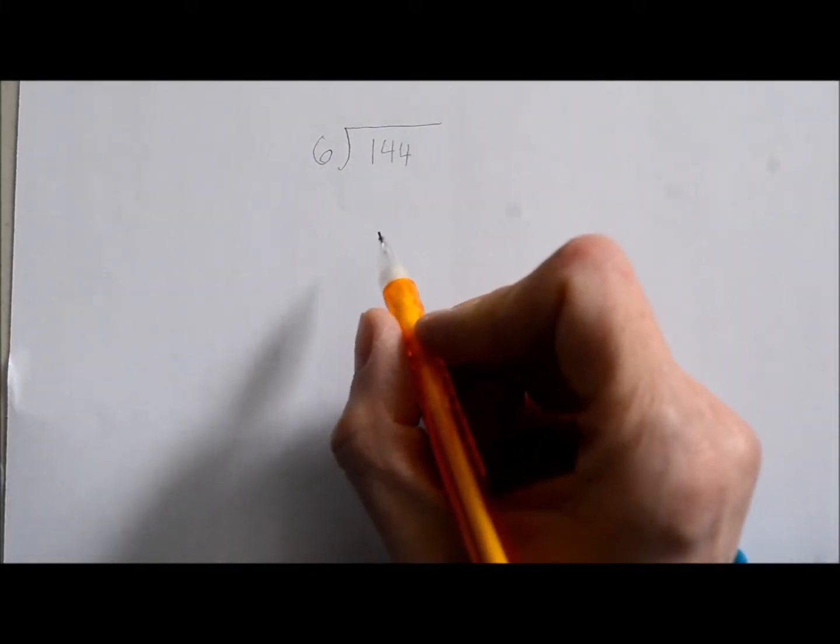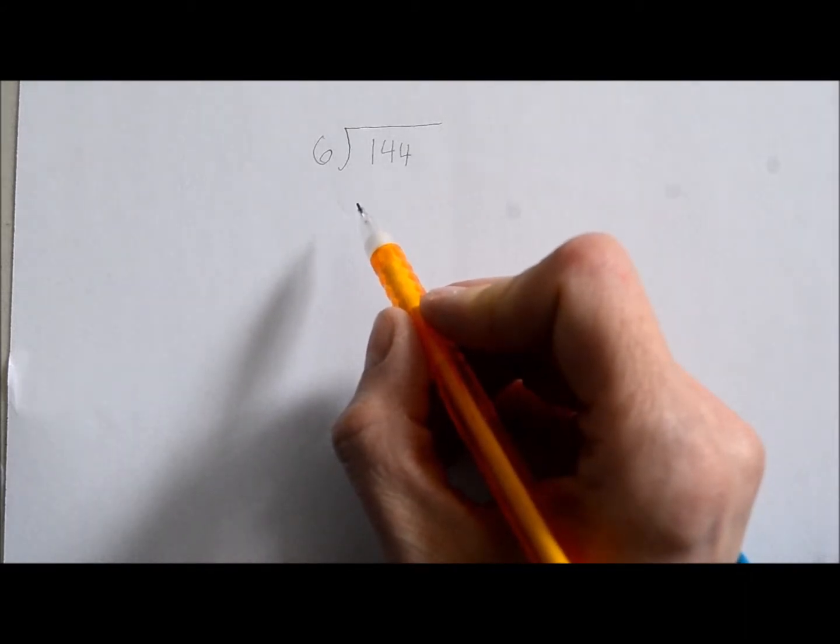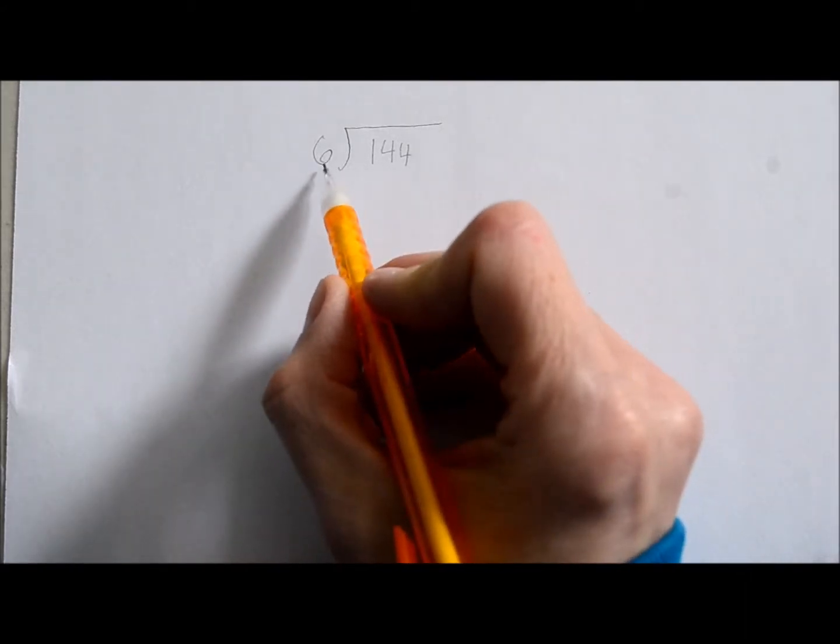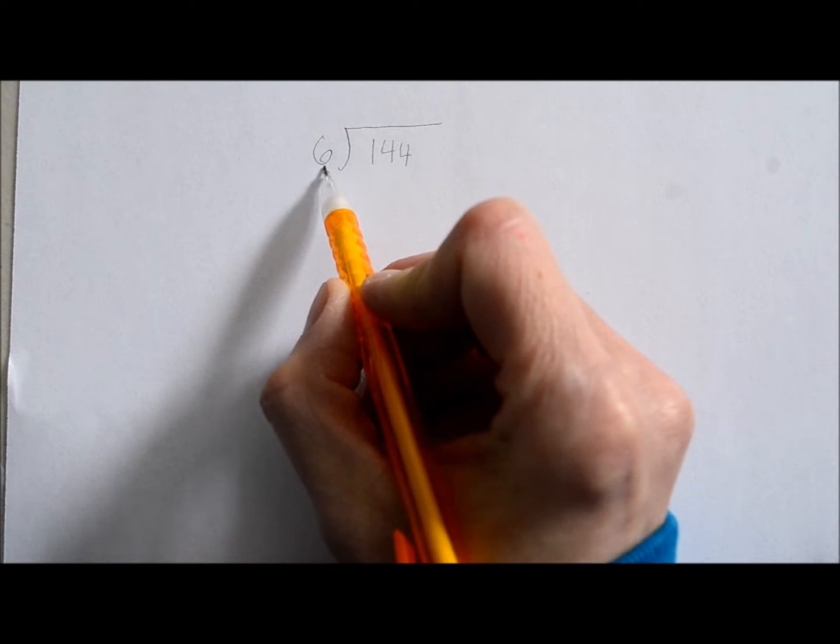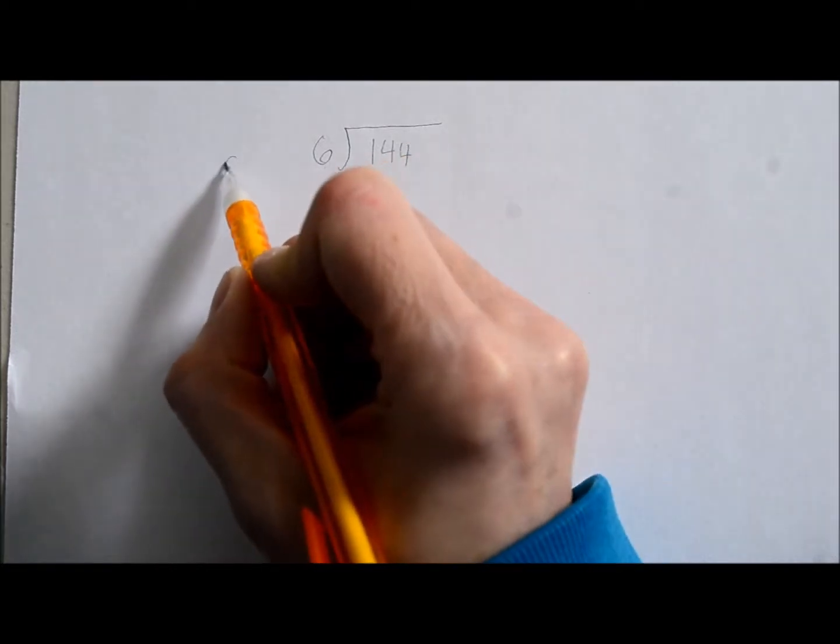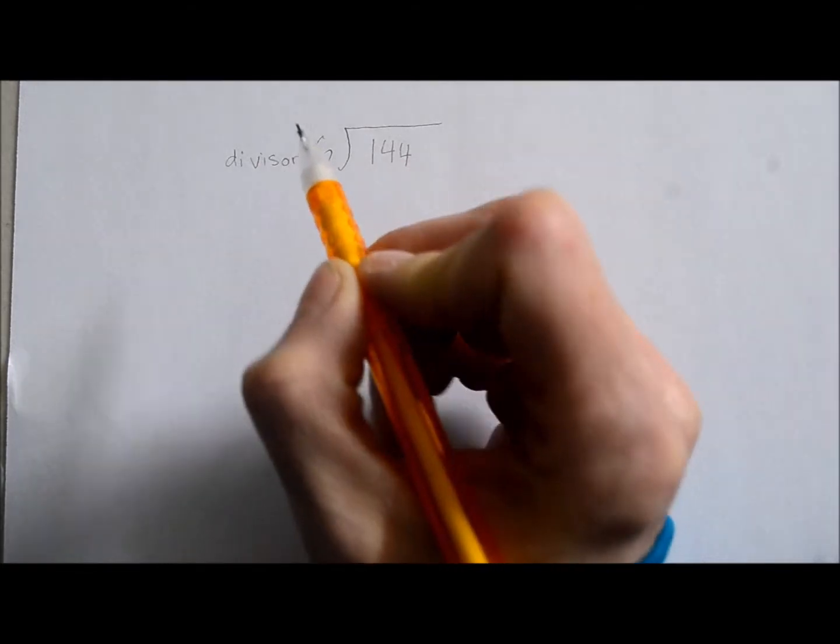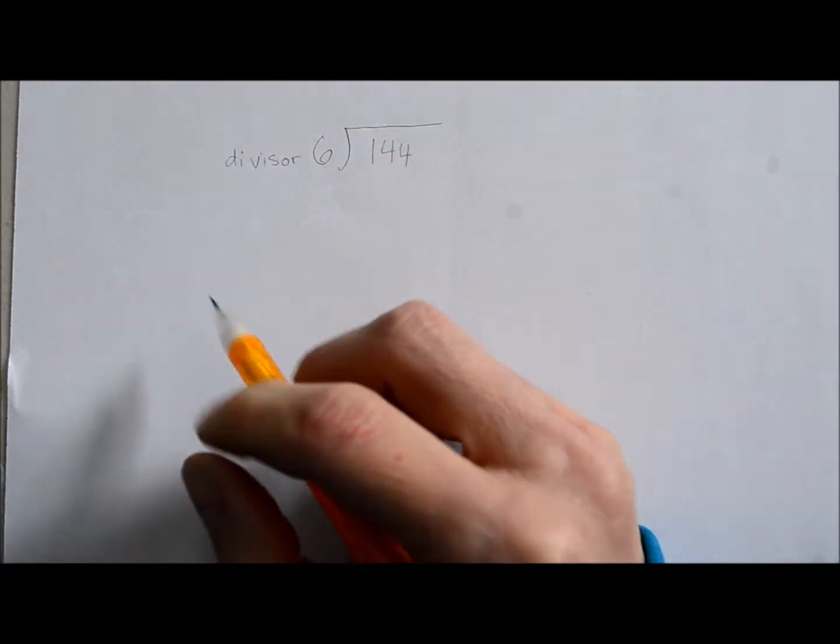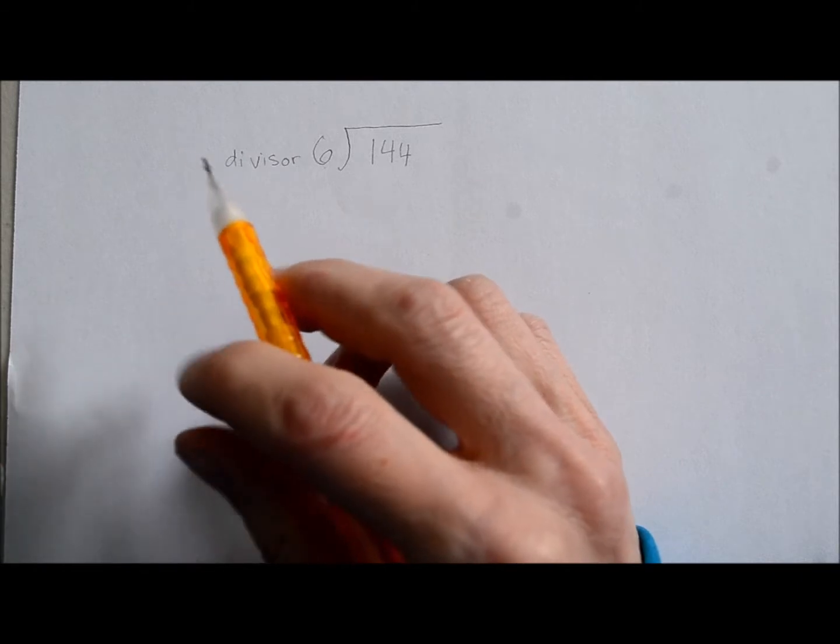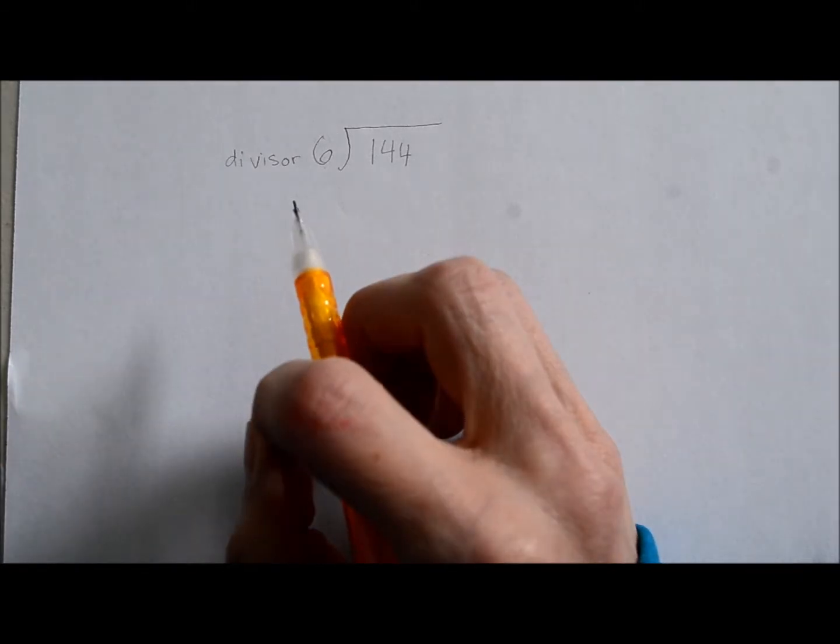Just for argument's sake, I'm going to point out the different parts of the question. So this part, this number here, is the divisor. It kind of sounds like a villain in a superhero comic book or something. It's the divisor.